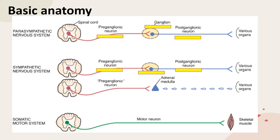The adrenal medulla can be considered the functional equivalent of a postganglionic neuron of the sympathetic nervous system. Because of this similarity, the nerve leading from the spinal cord to the adrenal gland is commonly referred to as a preganglionic neuron, even though there is no ganglion in this pathway.